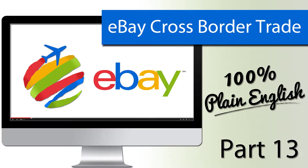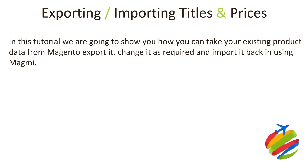Welcome to part 13. In this tutorial we're going to show you how you can export and then re-import the titles and prices to your new eBay sites. We've just created two new custom attributes within Magento for our titles — one is going to be in Australian English and one needs to be in German. We're not going to do any fancy translations during this tutorial; we're just going to export them out so that you can get them translated professionally.